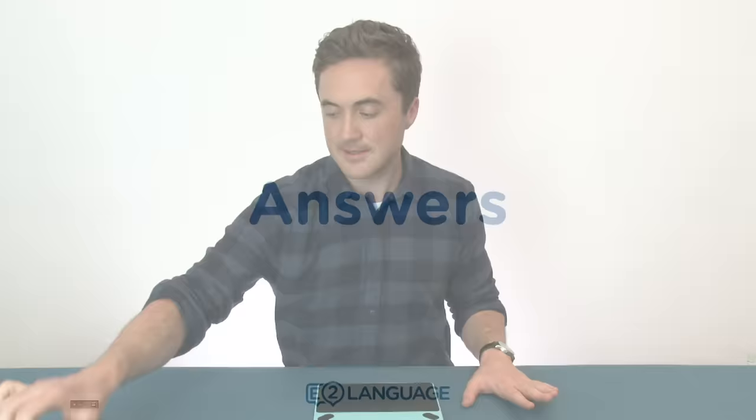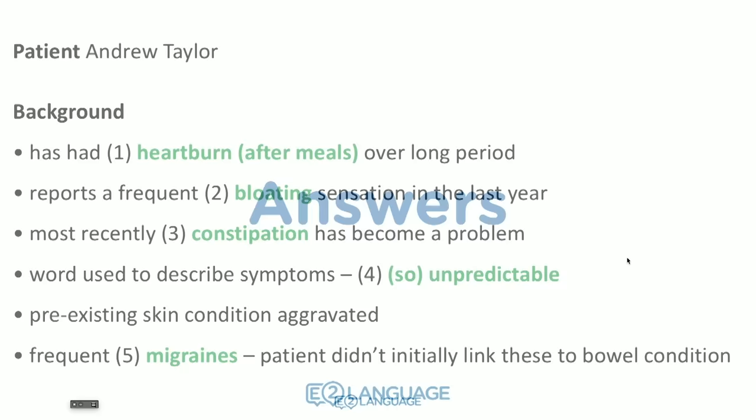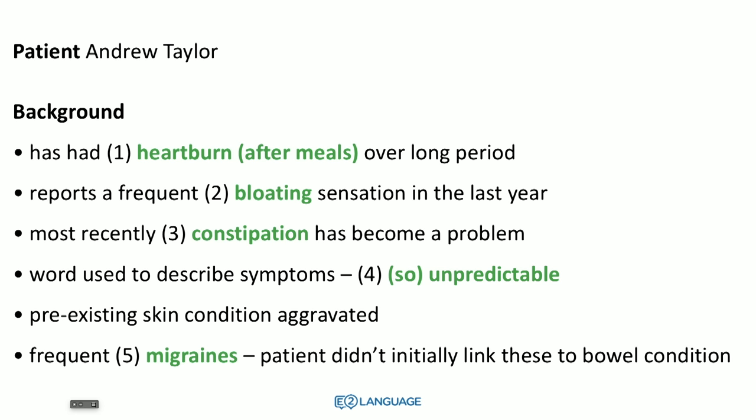Let's have a look at the answers. Number one — background: has had heartburn. You could have written 'heartburn after meals' (three words) or just 'heartburn' — either is correct. Number two: reports a frequent bloating sensation — we needed an -ing type adjective; I thought it was burning or itching, but it was actually bloating. Number three — most recently: constipation. Number four — word used to describe symptoms: unpredictable; possibly 'so unpredictable' but certainly unpredictable was the adjective. Number five — frequent plural noun: migraines. If you wrote 'migraine' without the S it would be considered incorrect.